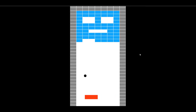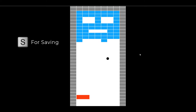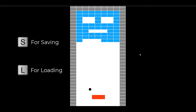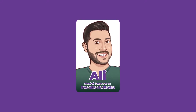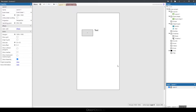Hit S for saving, and when I hit L you can see that whenever I hit L it loads from the last situation I saved. In this video we're going to talk about how to save and get data from local storage.